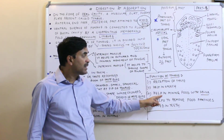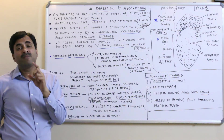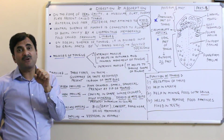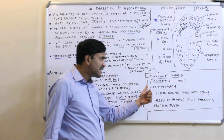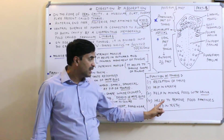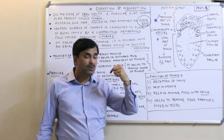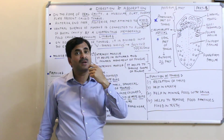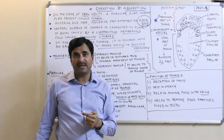The tongue also helps in mixing food with saliva. Salivary glands in the buccal cavity release saliva, and the tongue helps in even mixing of masticated food with saliva. Additionally, it helps to remove food particles which are fixed in the teeth — whenever food is stuck in the teeth, the tongue goes there and tries to remove that food particle.